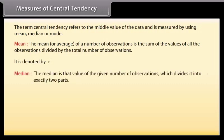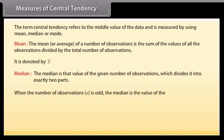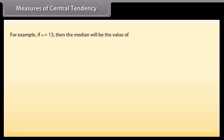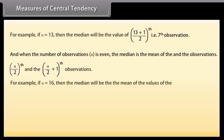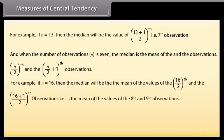Median. The median is that value of the given number of observations which divides it into exactly two parts. When the number of observations, that is n, is odd, the median is the value of the (n+1)/2th observation. For example, if n equals 13, then the median will be the value of (13+1)/2, that is, 7th observation. And when the number of observations n is even, the median is the mean of the n/2th and (n/2+1)th observations. For example, if n equals 16, then the median will be the mean of the values of 16/2th and (16/2+1)th observations, that is, the mean of the values of the 8th and 9th observations.